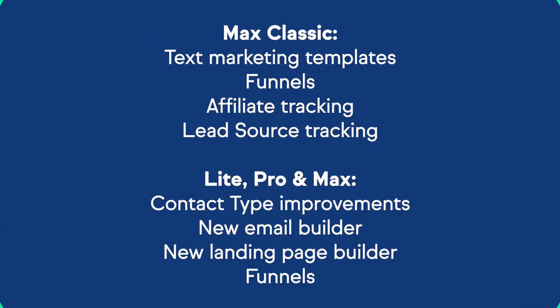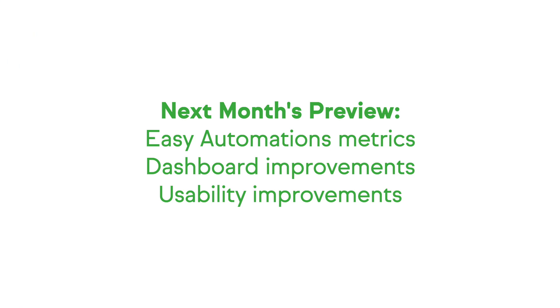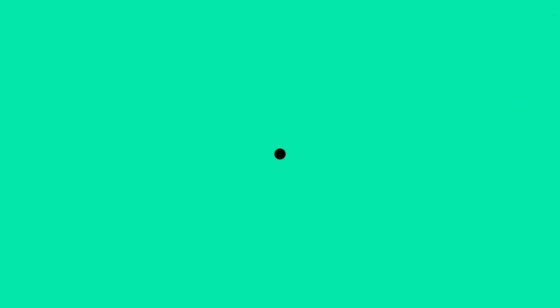Here's a quick recap of the new features and updates we showed you today. Let me know in the comments what feature you're most excited about implementing in your business. Here's a list of other updates and improvements we've made in the last 30 days — you can view more detail about each of these features in our product release notes, which are linked in the video description. Looking forward, here are a few things coming up next month: easy automations metrics, dashboard improvements, and additional usability improvements to make it easier to use the app to grow your business. Join me next month for more detail. Thanks for watching!